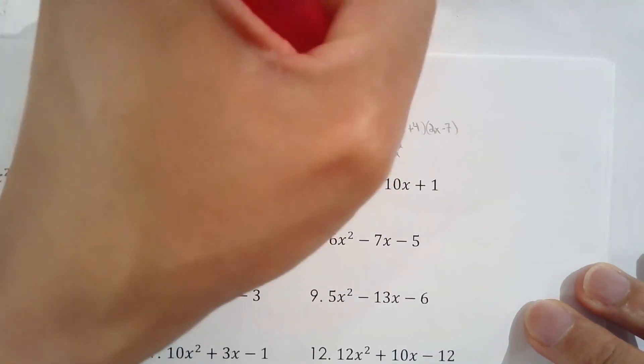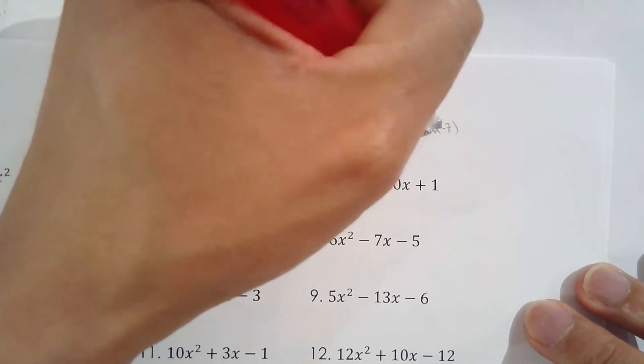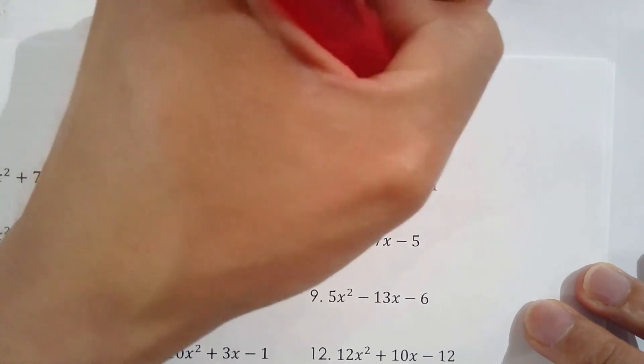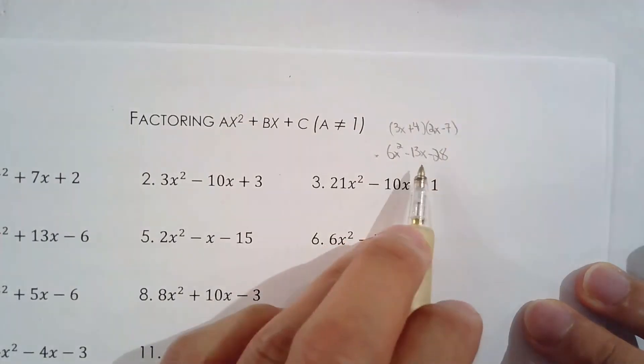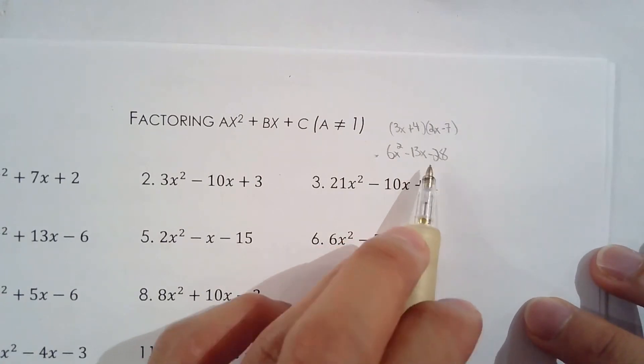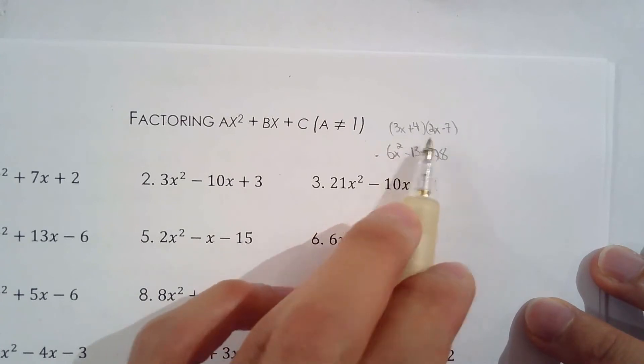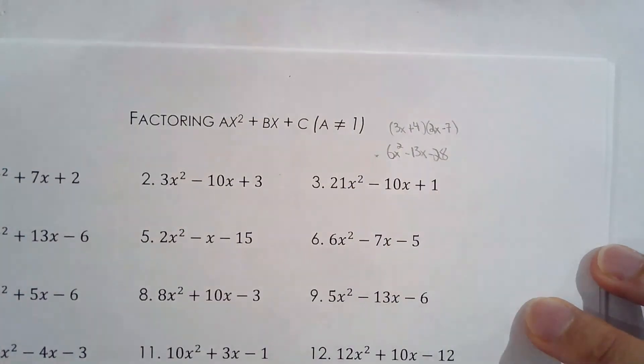So this is going to be 6x squared, negative 21 plus 8 is negative 13, and then negative 28. So you show this to your friend, 6x squared minus 13x minus 28, and then your friend will have to regenerate the two binomials, which is 3x plus 4 and 2x minus 7.